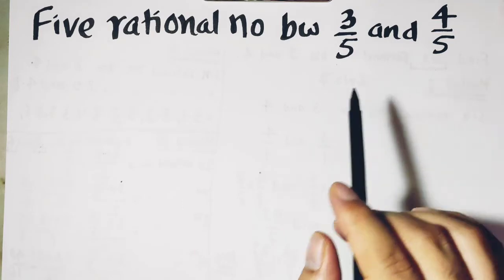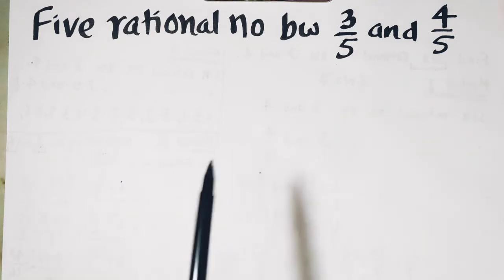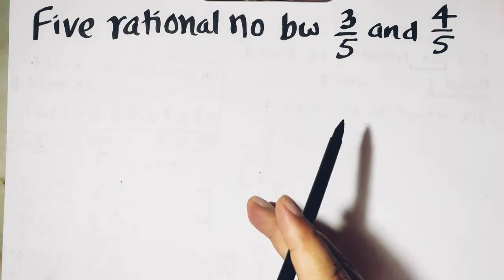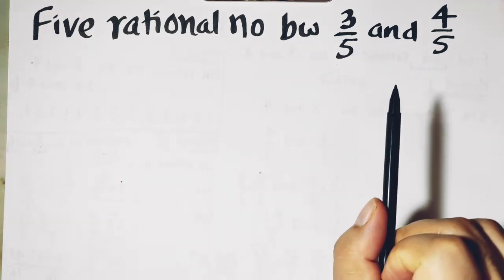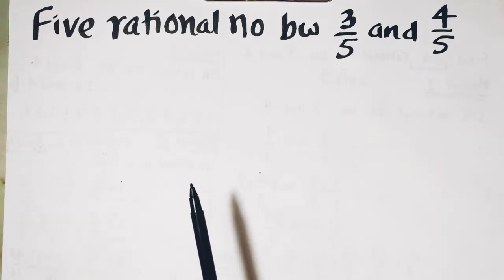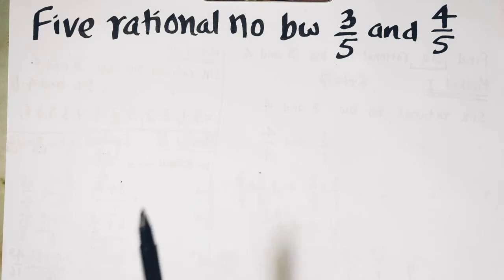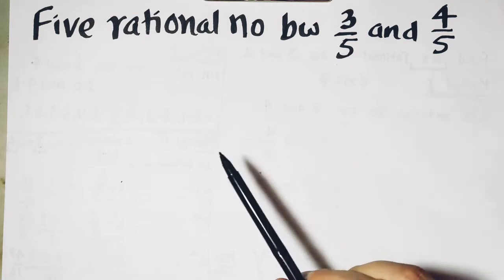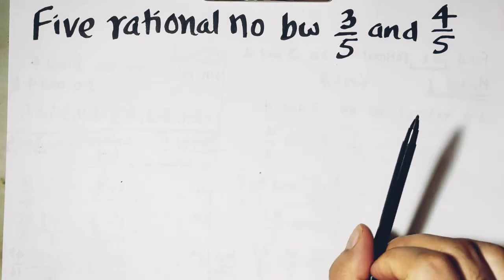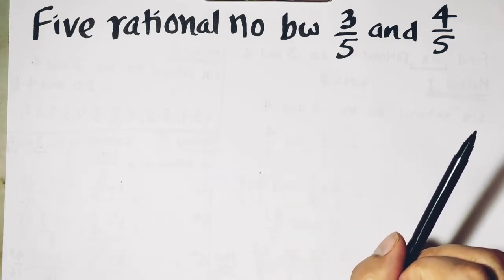In this video you will learn how to find 5 rational numbers between 3 upon 5 and 4 upon 5. Again, as I had said in question number 2, there can be infinite numbers of rational numbers between two numbers.